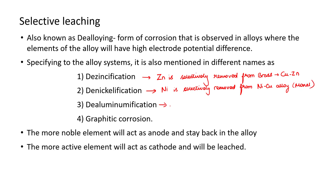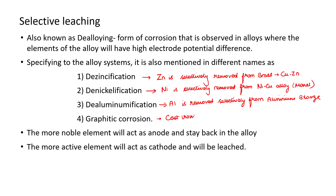De-aluminumification, where aluminum is removed selectively from aluminum bronze, and graphitic corrosion or graphitization, which is found in cast irons, where iron is getting leached.